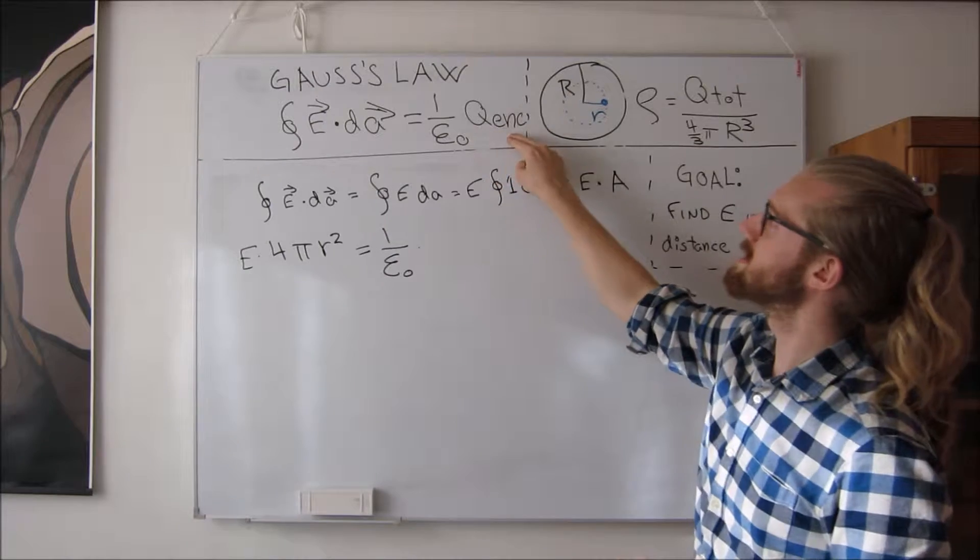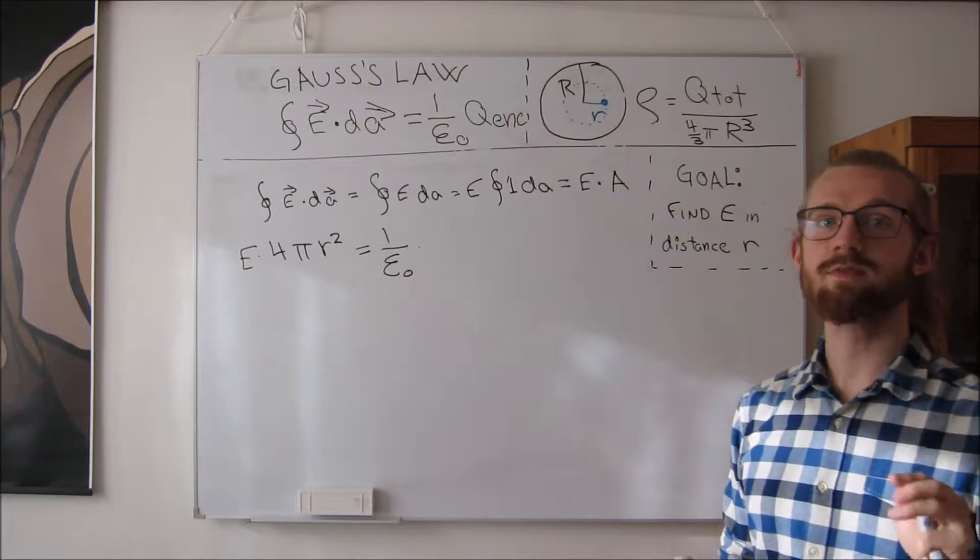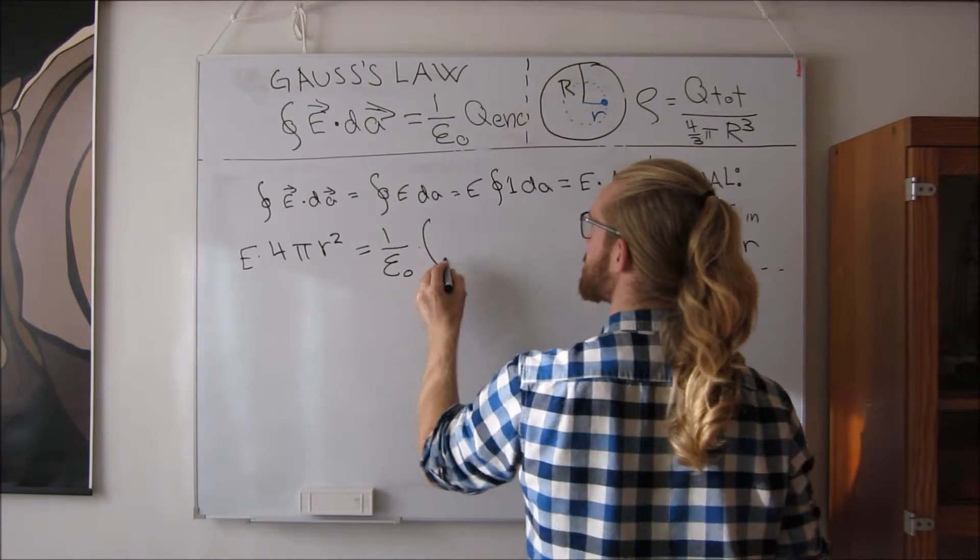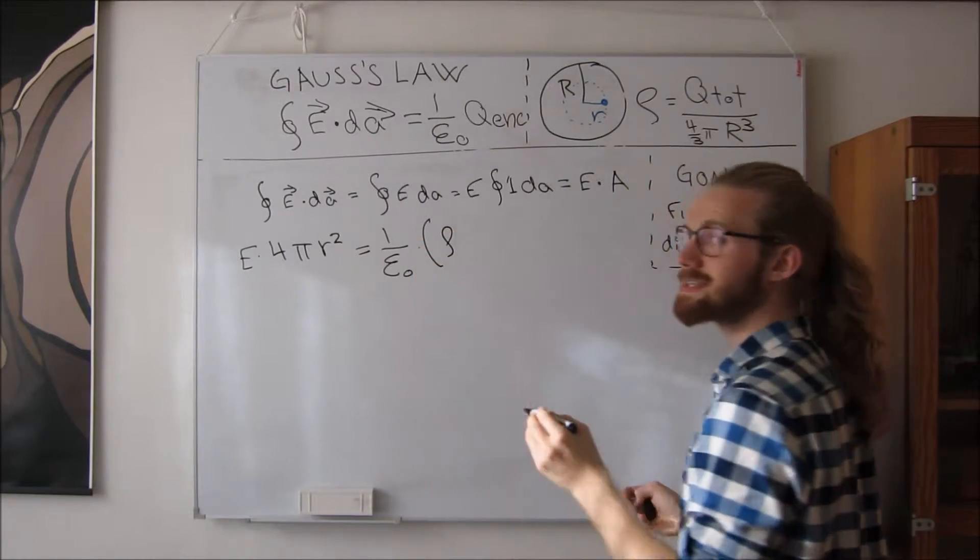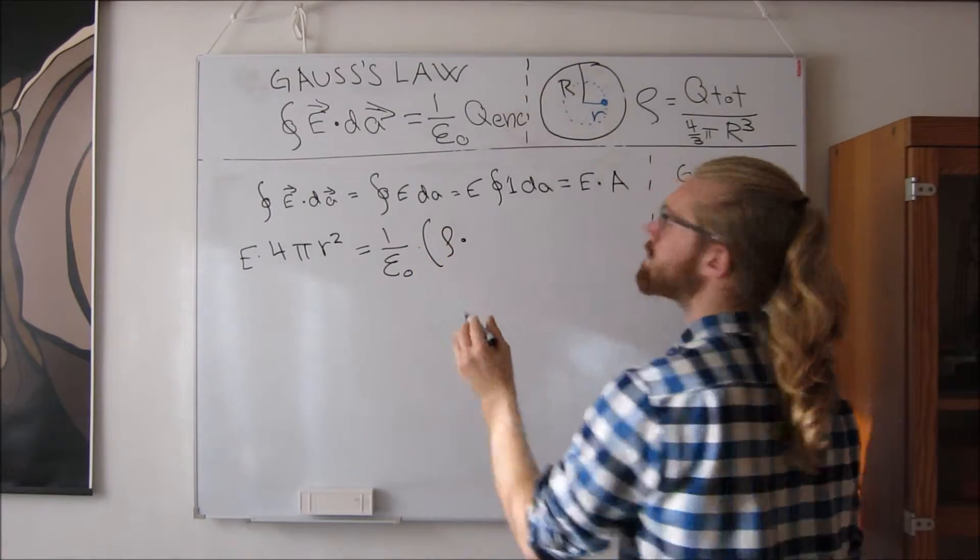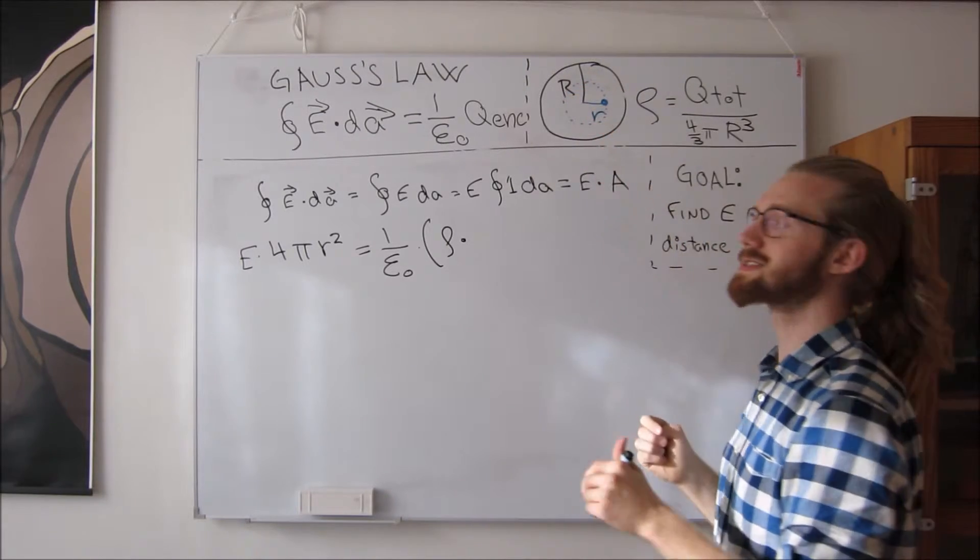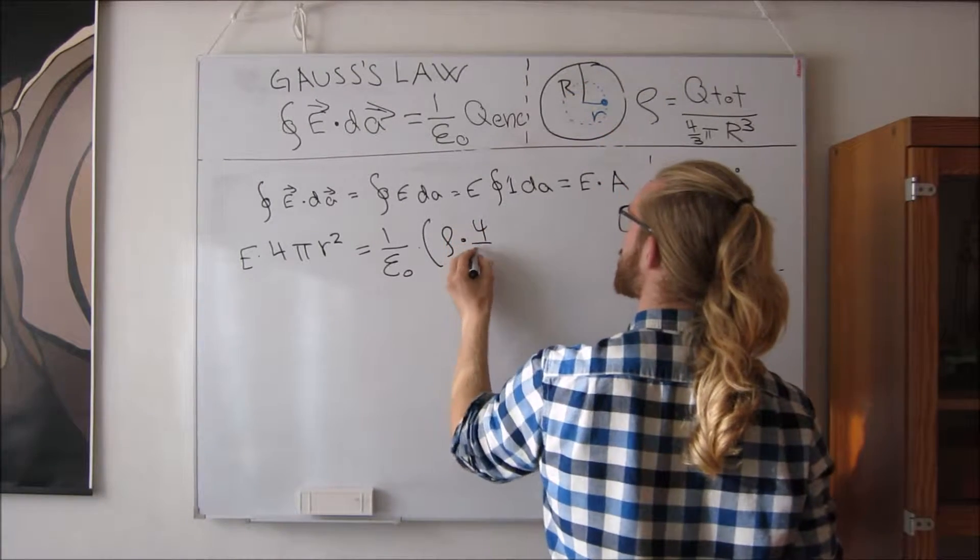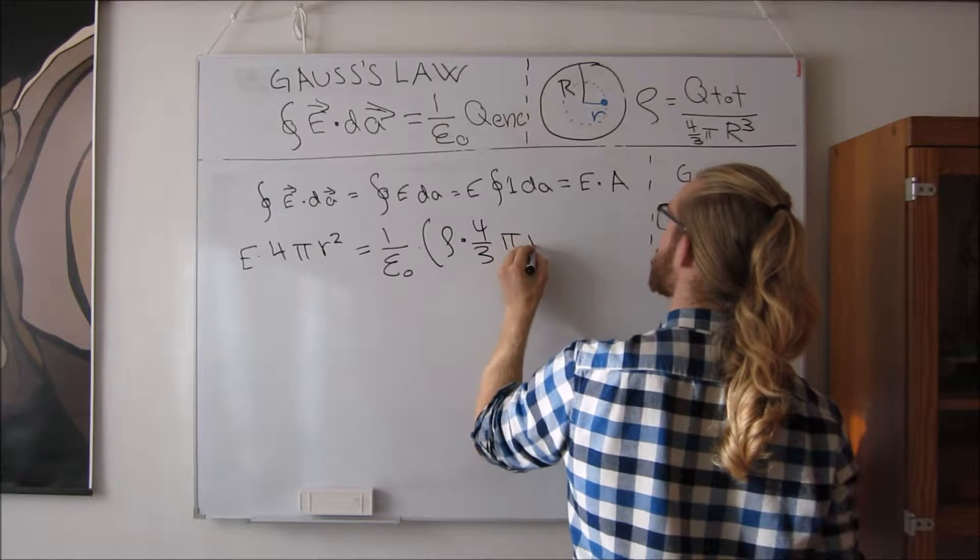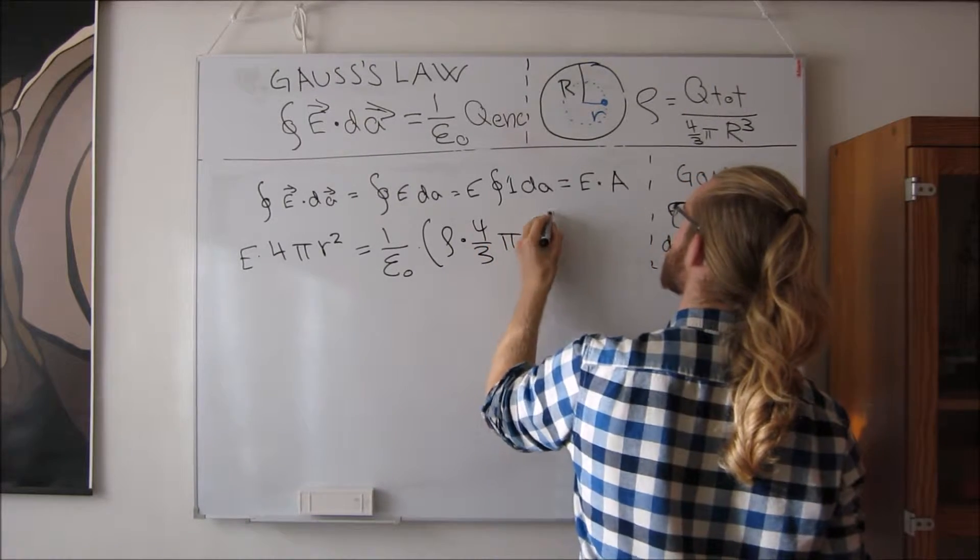And this charge can be rewritten as the charge density and then the volume enclosed. And the volume of this sphere, the blue sphere, is 4 over 3 pi and then radius cubed.